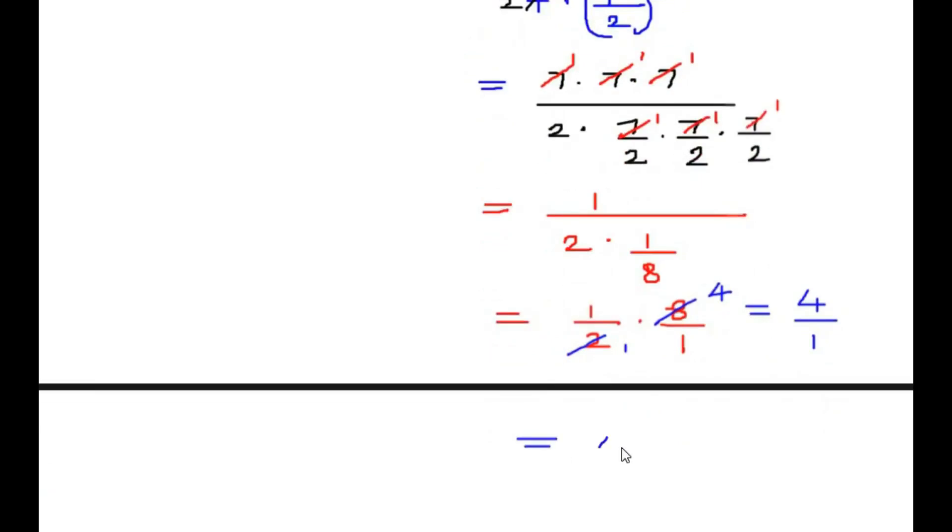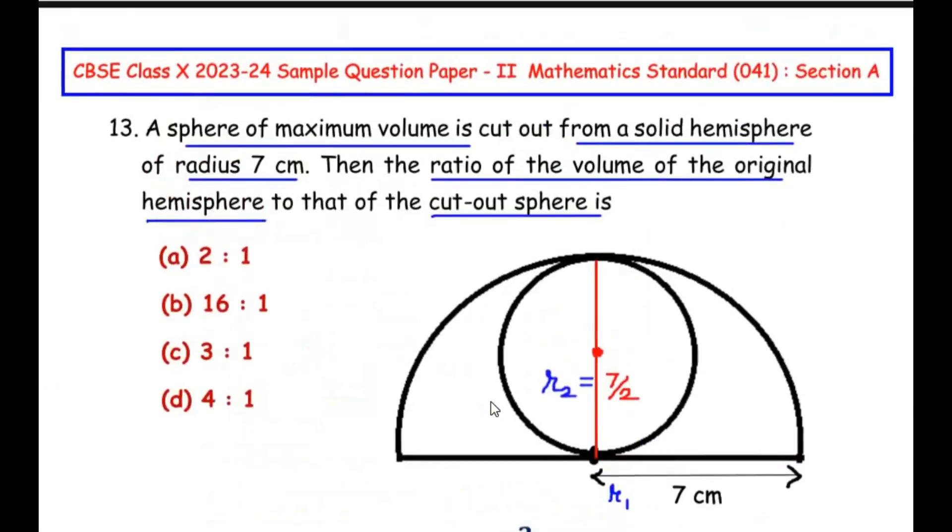So let me write it as a ratio: 4:1. Let us see if 4:1 is in the options. Here we have option D, 4:1.